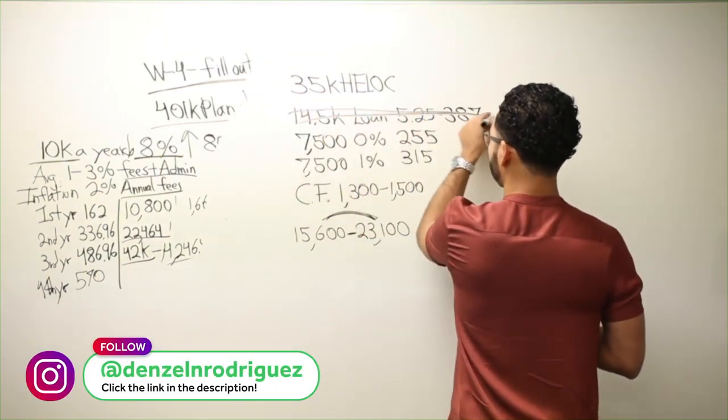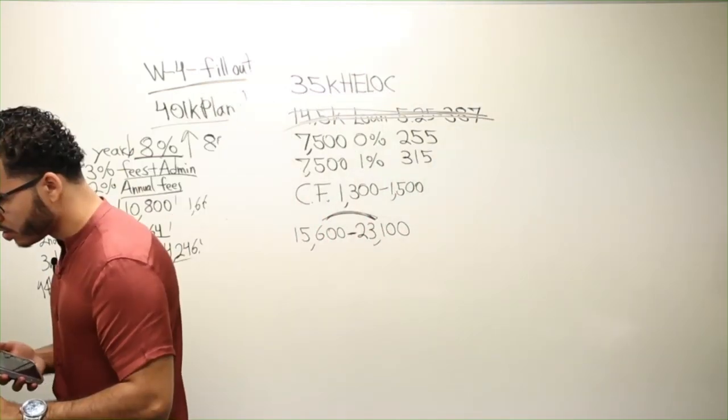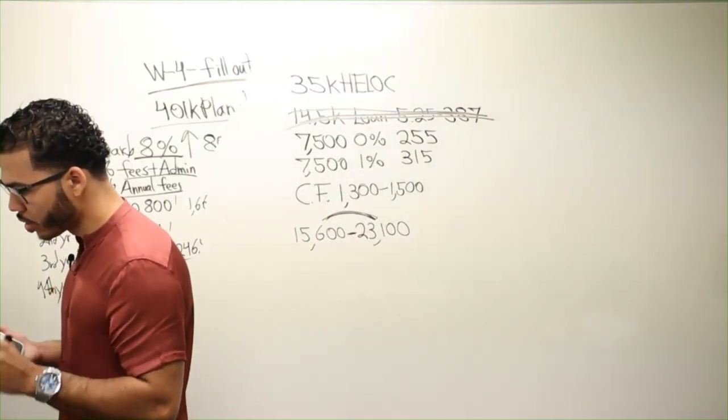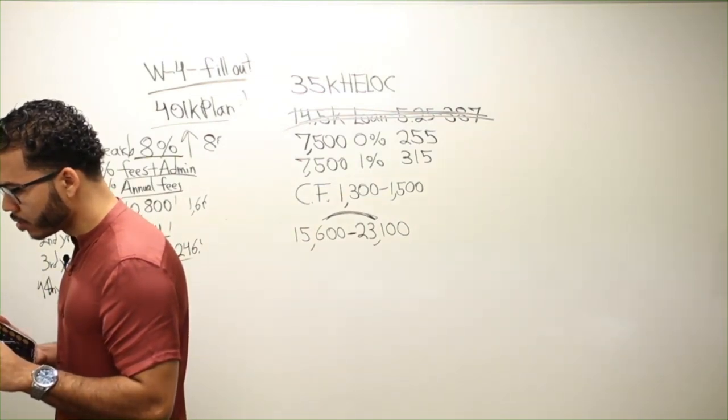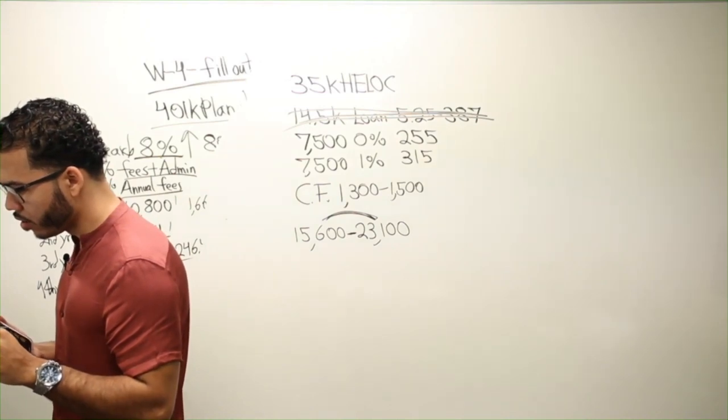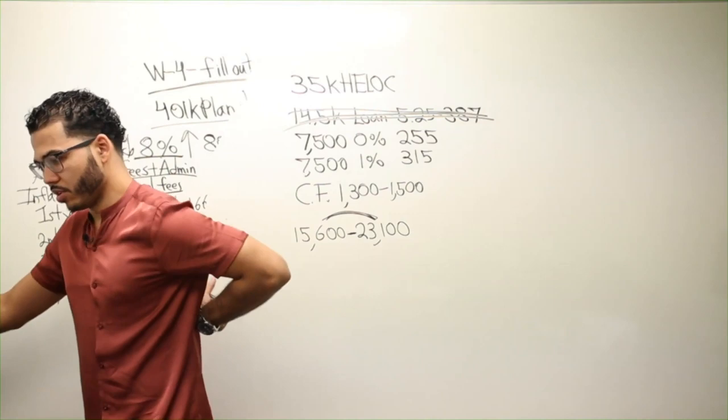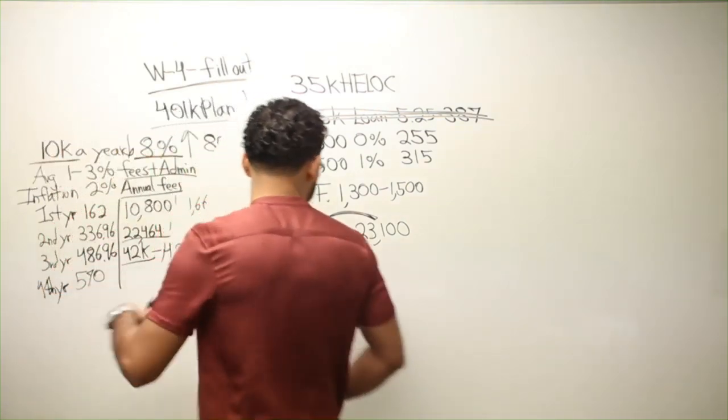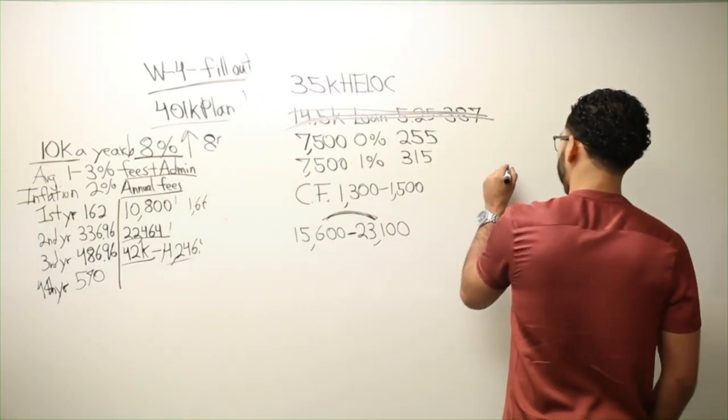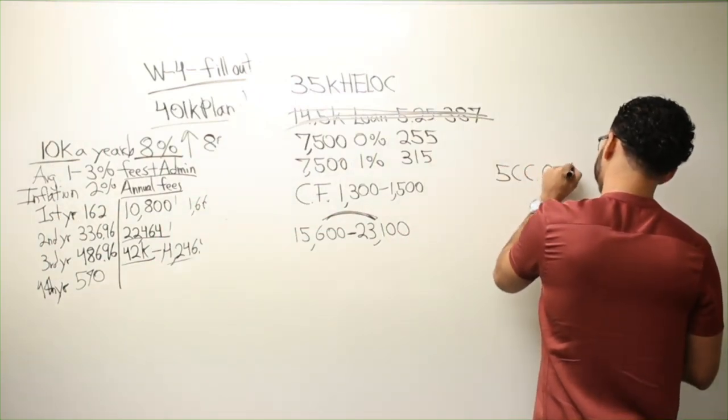So I would get rid of that. And then he said he's got two credit cards, 20k limit. He owes 4k on the credit card. And the other one has 5k limit with 0%. So the 5k credit card has 0%. I'm going to leave that alone.